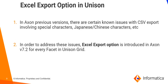Now let us discuss about a new feature in Axon version 7.2. In Axon previous versions, there are certain issues with the CSV export involving special characters or multi-byte characters. In order to address these issues, an Excel export option is introduced in Axon version 7.2 for every facet in the unison grid.